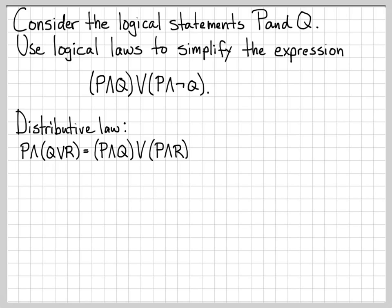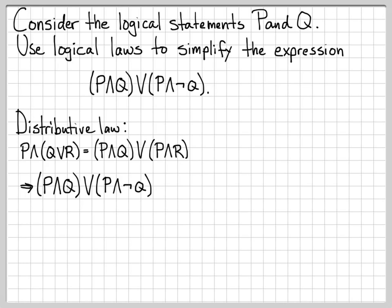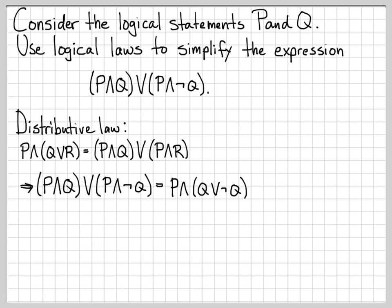To apply this law to my original logical expression, I'm going to go backwards. I already have a P distributed in both spots, so I'm going to factor back to something that looks like P and (Q or not Q) to simplify. Applying the distributive law, I can write the original expression as P and (Q or not Q).